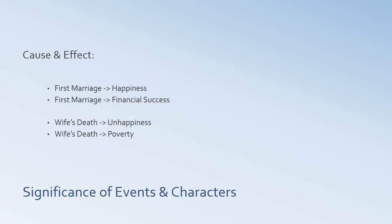Some clear cause and effect: his first marriage leads to happiness and financial success. But his wife's death leads to unhappiness and poverty. Learning that the jewelry is real first causes him great anguish, but then causes great pleasure because he gets money from it. Getting all this money makes him happy initially, but then makes him unhappy because he marries an unpleasant woman. So the cause and effect is very complicated.